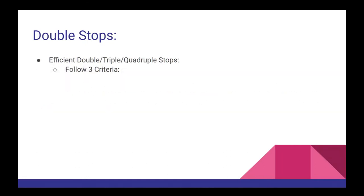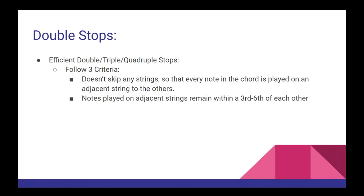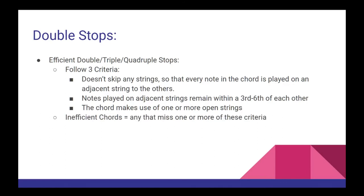An efficient chord can be identified by three criteria. One: it doesn't skip any strings — every note in the chord is played on an adjacent string. Two: notes played on adjacent strings are within a third to a sixth from each other. Three: the chord makes use of one or more open strings. If a chord is missing any of these three criteria, it should be classified as inefficient and you should consider rewriting it or ditching it altogether. Unless you're an experienced string player yourself, I strongly urge you to follow these criteria whenever writing your own music.